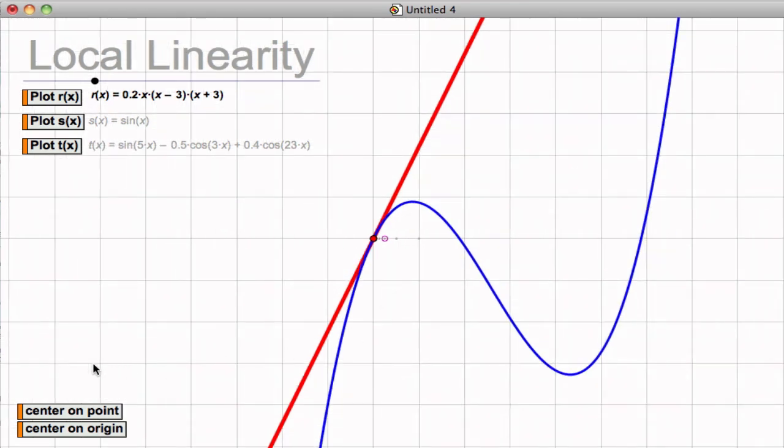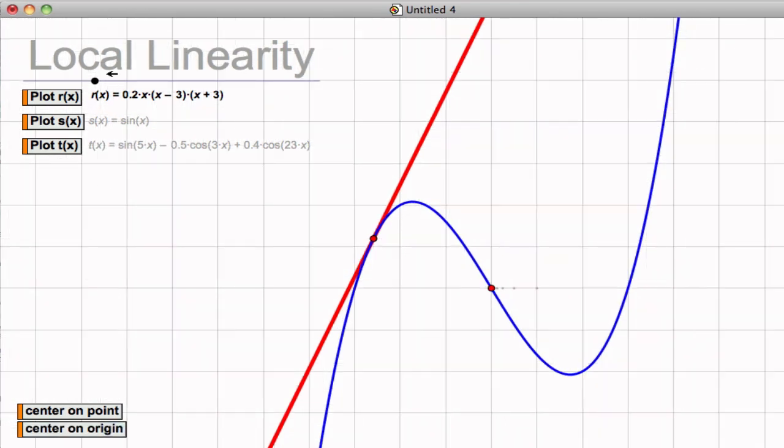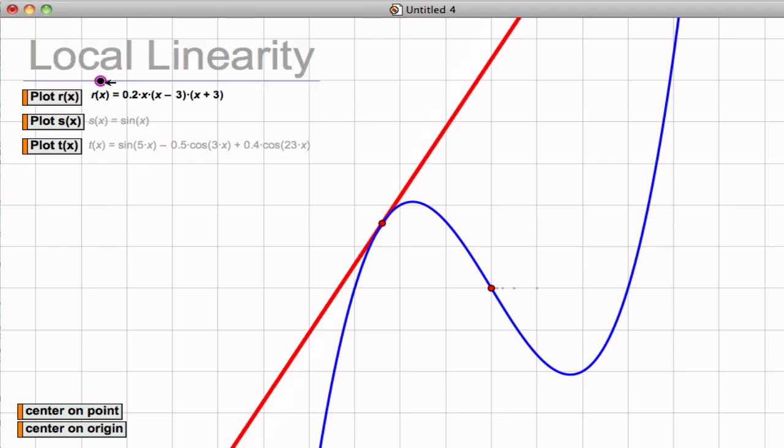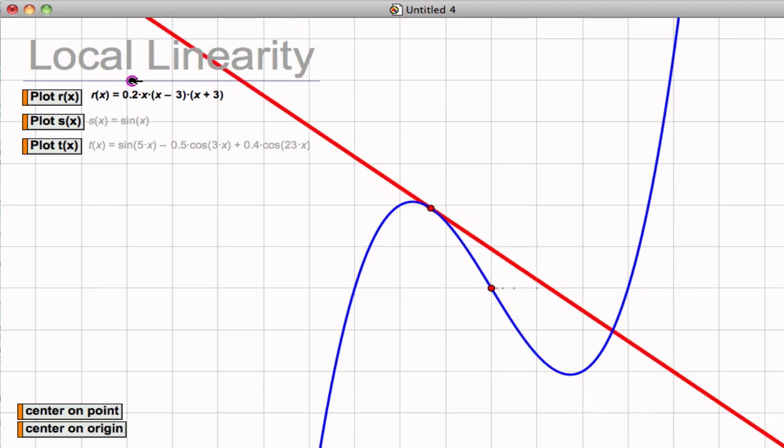So we can look at this at a different point. If I move this point, and we can look somewhere else, there's a tangent line there, and again, if we zoom in...